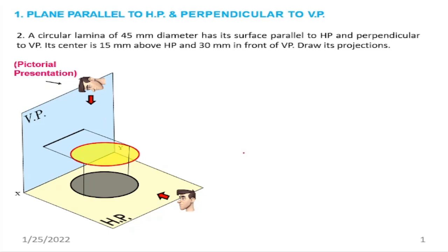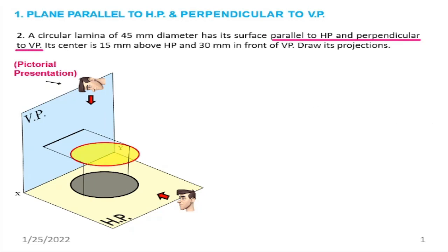This is a circular lamina. Lamina is nothing but a plane — thickness is negligible. A circular lamina of 45 mm diameter has its surface parallel to HP and perpendicular to VP. The main condition of our plane is: plane parallel to HP and perpendicular to VP. The first thing you are supposed to do is identify what is the position of the plane.